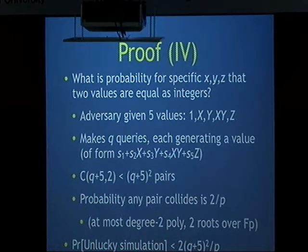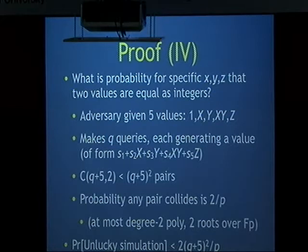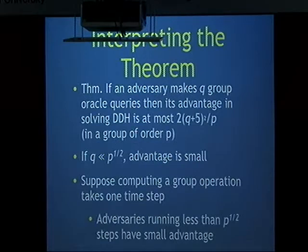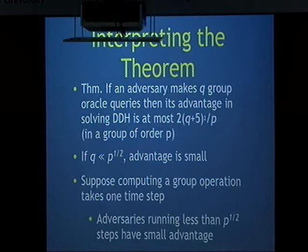If there was a collision, we were unlucky — the simulation was unfaithful and we can't say anything about the adversary's advantage. But if we weren't unlucky, we can bound the advantage at one half. Putting everything together: if an adversary in the generic group model makes at most q group oracle queries, then its advantage in solving DDH is at most 2(q+5)²/p, where p is the order of the group.